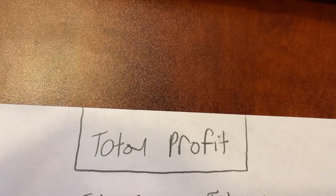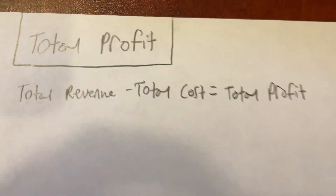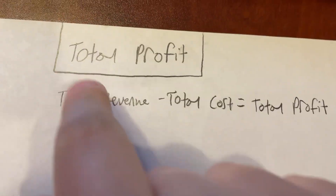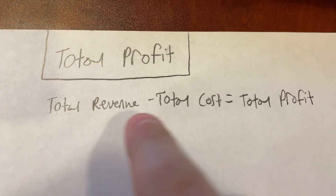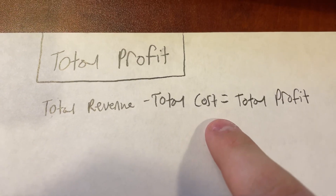Hey guys, welcome back to Miles's Microeconomics Lessons. You know the drill, so let's get into today's topic: total profit. Total profit is just total revenue that a company makes minus its total cost. Let's go ahead and look at a few examples of some companies and how they calculated their total profit.